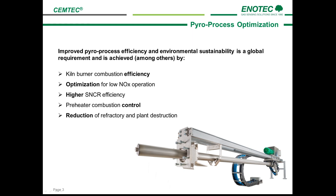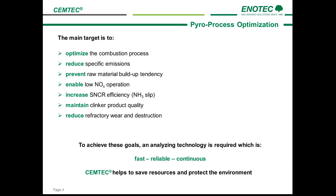Number five, reducing refractory destruction. Cement plant operators need to optimize the combustion process, reduce specific emissions, enable low NOx operation, increase SNCR efficiency, maintain clinker product quality, and reduce refractory wear and destruction. To achieve all these goals you will need an analyzing technology that is fast, reliable, and continuous.